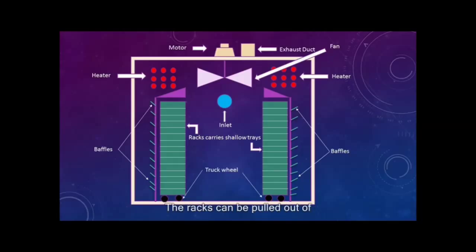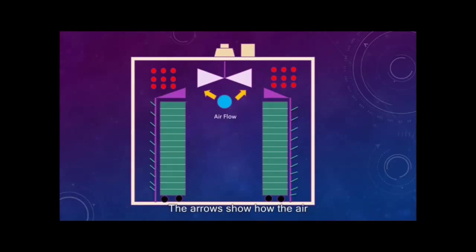The racks can be pulled out of the chamber at the end of the drying cycle. The arrows show how the air is being circulated during the drying process.